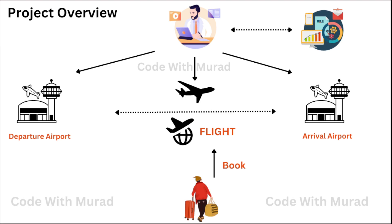The project contains two modules: administrator and passenger. First, the admin will register and login, then add airplanes and multiple airports in the system. After adding airplanes and airports, the admin can add flights by selecting departure airport, arrival airport, departure time, and arrival time. As soon as admin adds flights, passengers will be able to see the flight details on the website.